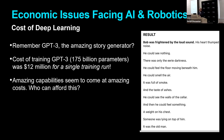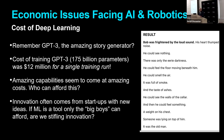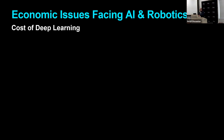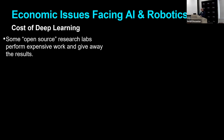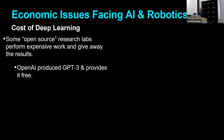It seems that amazing capabilities only come at amazing costs. Who can afford this? Innovation in our society often comes from startups with new ideas. But if machine learning is a tool that only the big boys can afford, is the cost stifling innovation? Some open-source research labs perform this expensive work and then give away the results, and that is one way of dealing with this very high cost. For instance, GPT-3 was produced by an organization called OpenAI, which paid for all the cost of development and then provides the outcome and the source code for free.